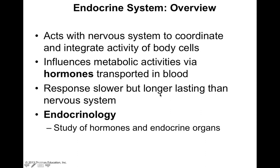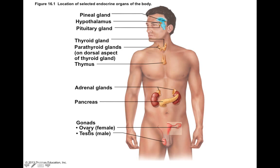However, the response of the endocrine system is going to be longer lasting than the nervous system. So the endocrine system is going to have longer lasting effects on various target tissues. The study of hormones and endocrine organs is called endocrinology, and when we look here at this slide, we can see a basic overview of the major endocrine glands throughout the body.